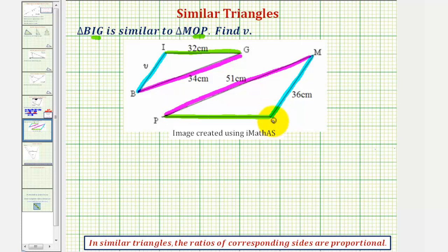And now we can set up our proportion to solve for V. The first ratio will compare the length of BI to the length of MO. So we'd have V is to 36 centimeters, or V is to 36 as,